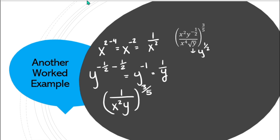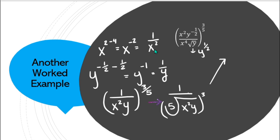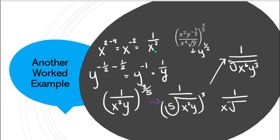Now I have options about how to express this. I could write it as 1 over the 5th root of x²y³. I could also apply the cube and have 1 over the 5th root of x⁶y³. And if I wanted to get fancy, I could take an x out from under the 5th power root and have 1 over x times the 5th root of xy³. These are all valid simplifications.